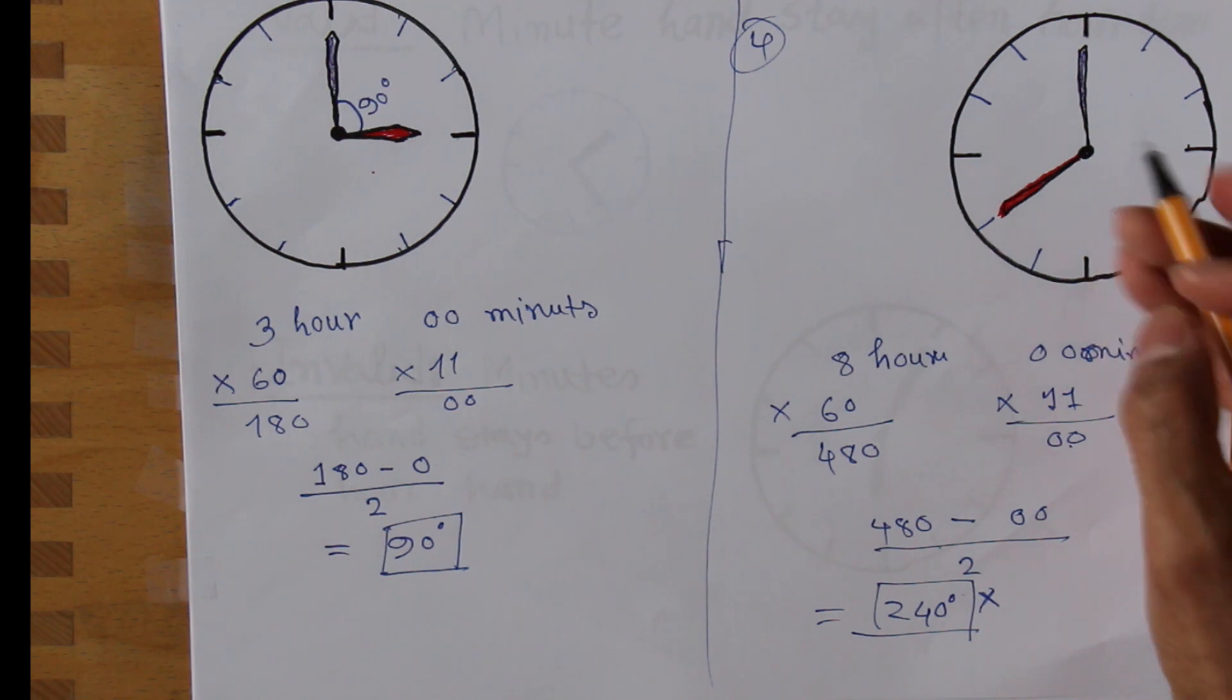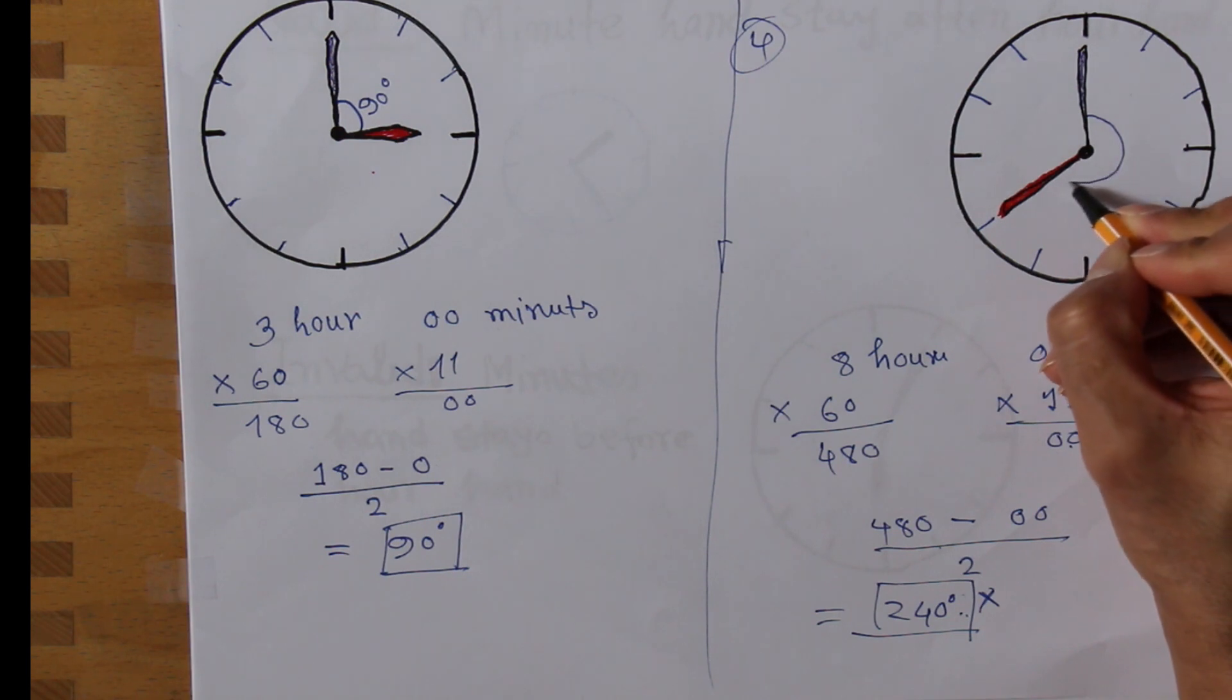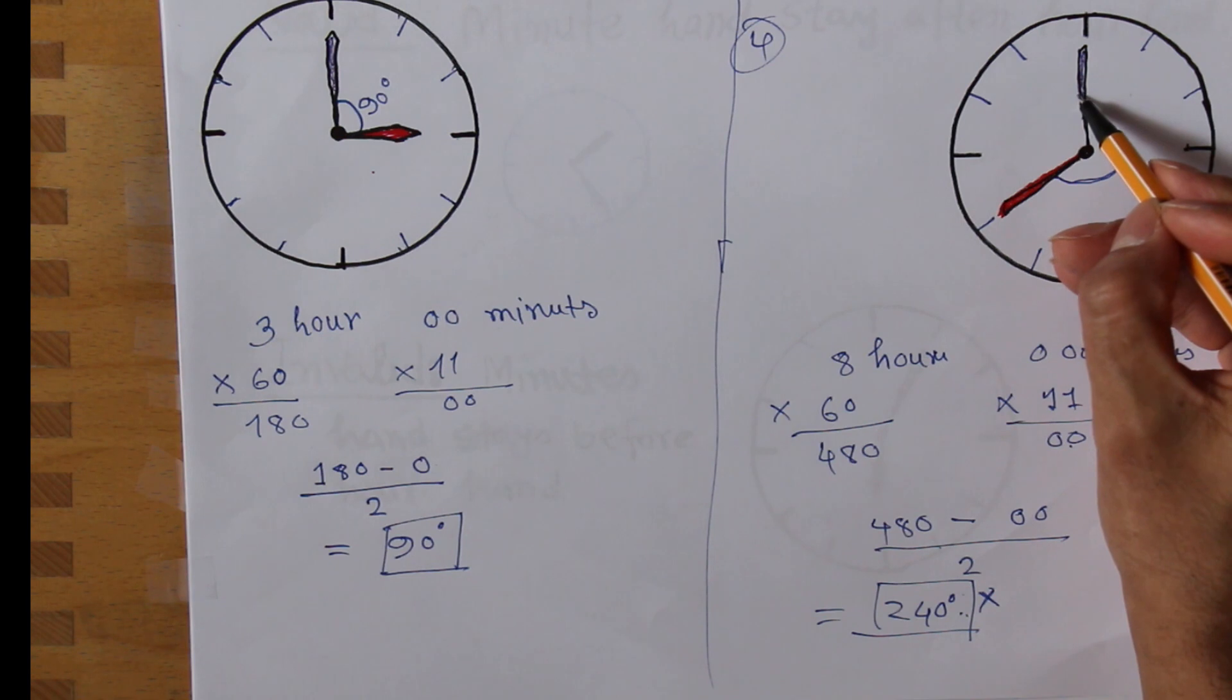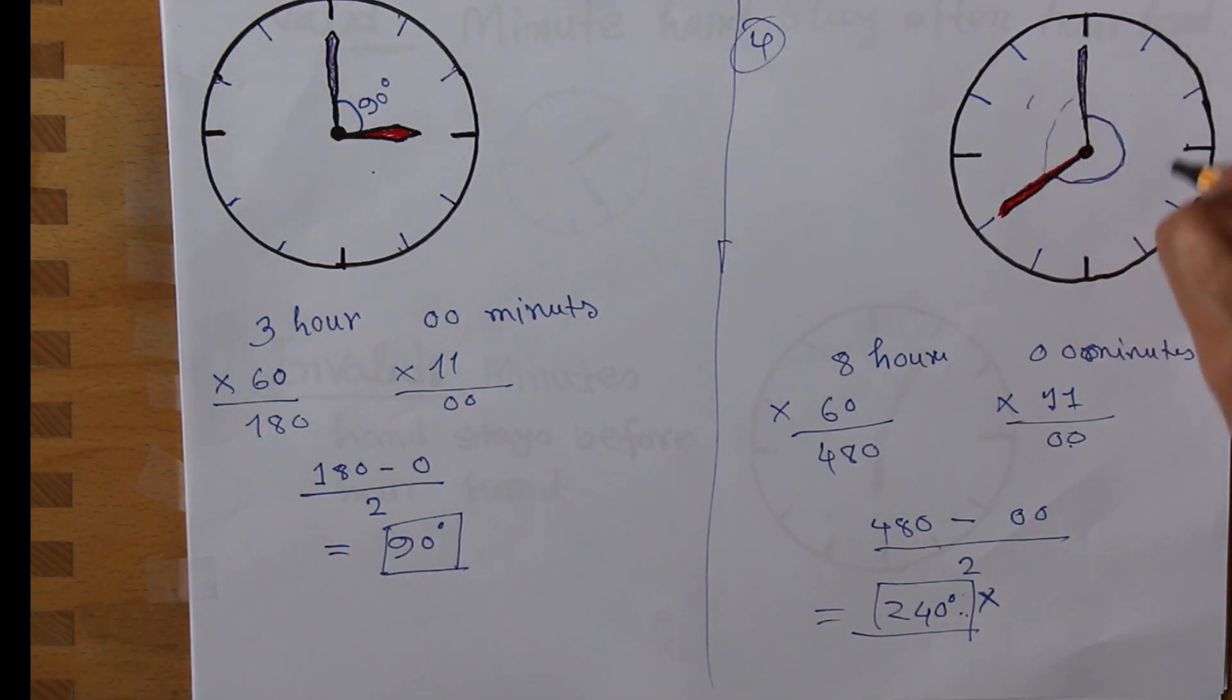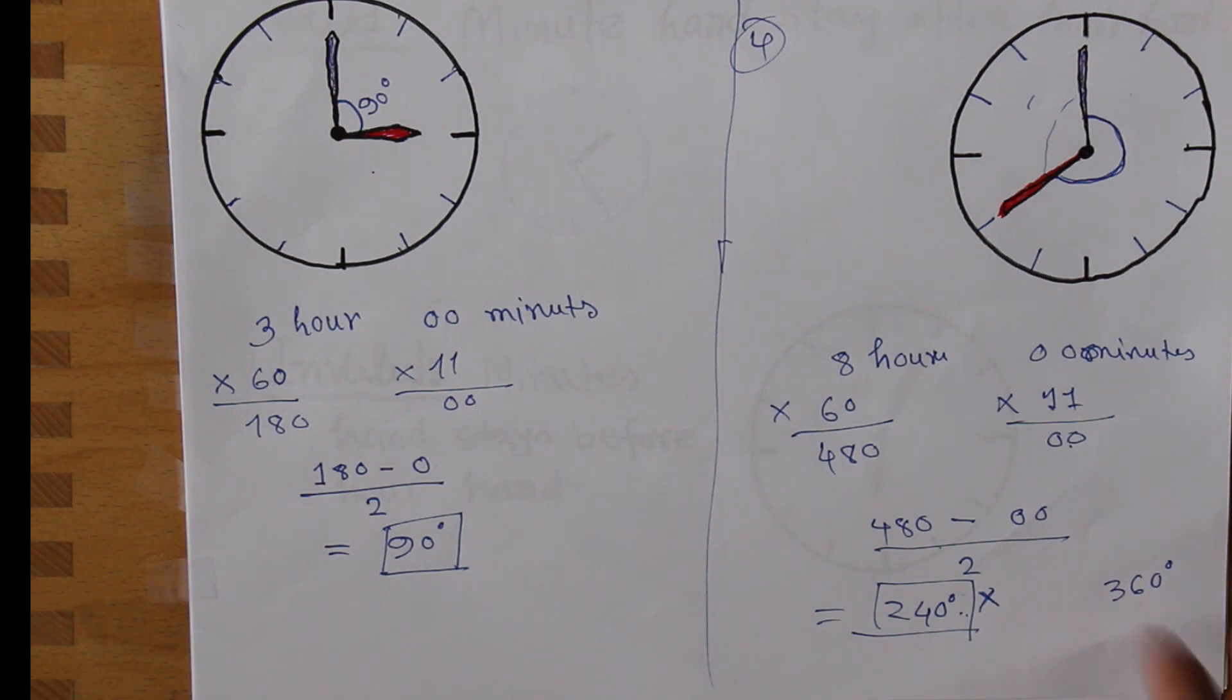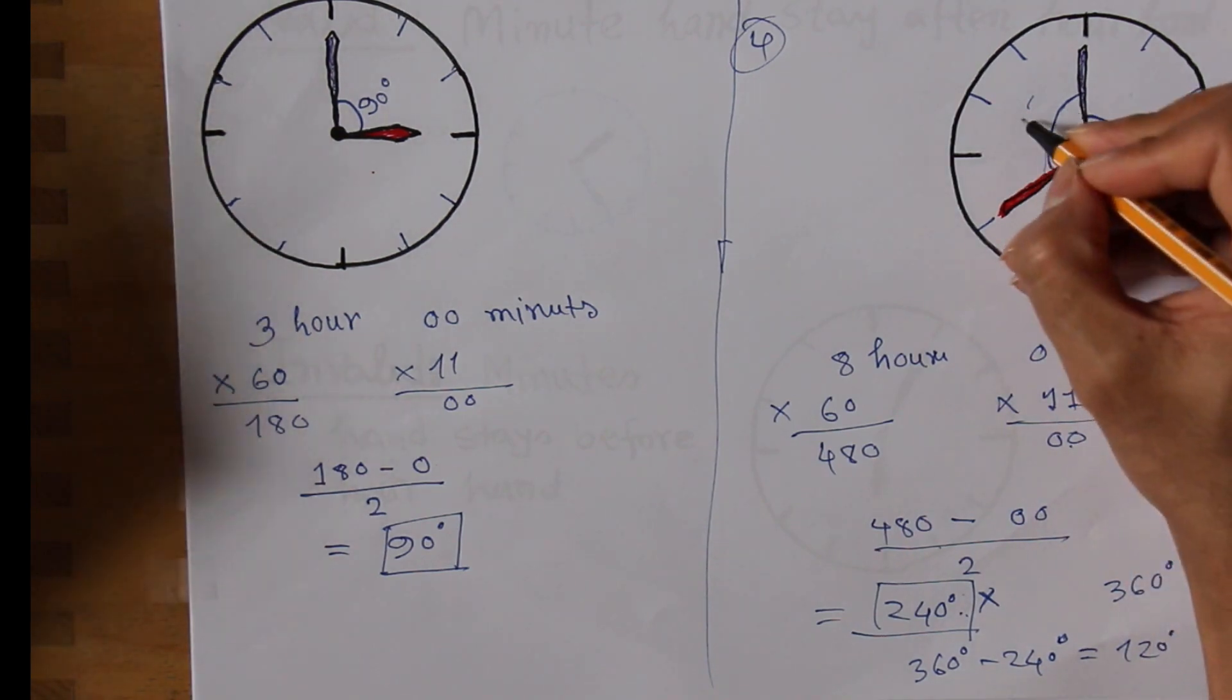Look here. This is not the answer. Because there is a rule: if the result is more than 180 degrees, there's another step. This angle is representing this side, 240 degrees. But our intended angle is this side. The total angle of a circle is 360 degrees. So, 360 minus 240 equals 120 degrees. This angle is 120 degrees.